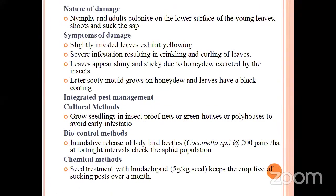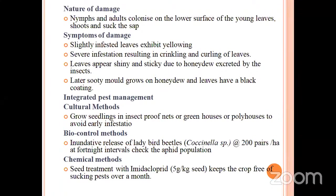Coming to the nature of damage: the damaging stages are the nymph and adult. They colonize the under surface of the leaves and suck sap from the leaves, leading to yellowing, curling, and crinkling of the leaves. These aphids excrete honeydew secretion on the leaf surface, and later sooty mold develops. The leaves become coated with black encrustation, leading to reduced photosynthetic activity of the plants, and further leads to wilting and drying of the plant.